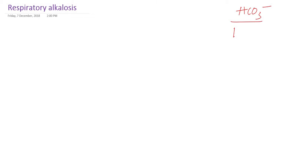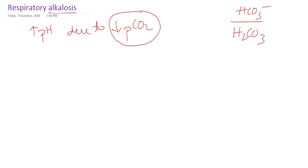We already learned that respiratory means it's pertaining to partial pressure of carbon dioxide or carbonic acid. So let me write the buffer here — bicarbonate and carbonic acid. Alkalosis means there is increase in the pH. So in respiratory alkalosis there will be increase in the pH, and this increase in the pH is due to decrease in the carbon dioxide.